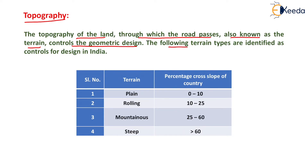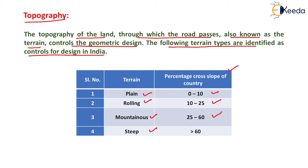The following terrain types are identified as controls for design in India. The various types of terrain and their cross slope in percentage are: plain terrain — 0 to 10%, rolling terrain — 10 to 25%, mountainous terrain — 25 to 60%, and steep terrain — greater than 60%.